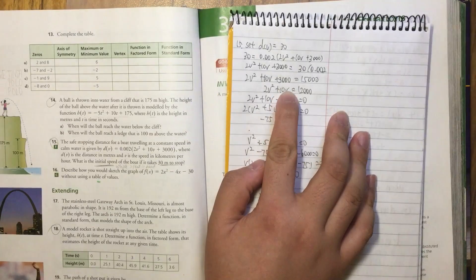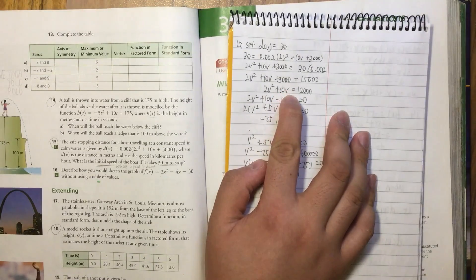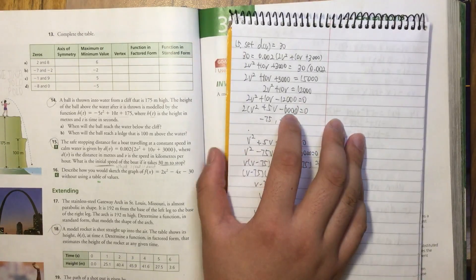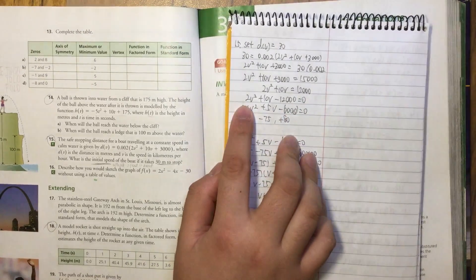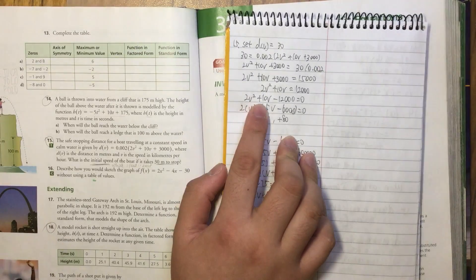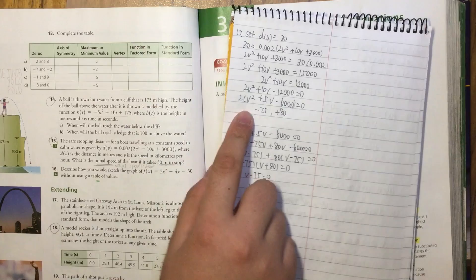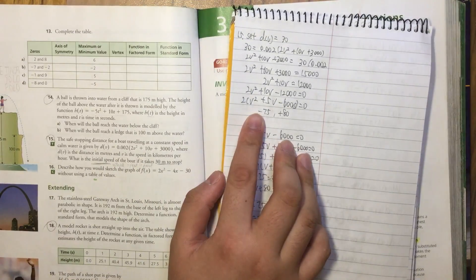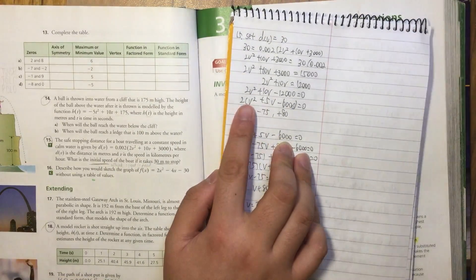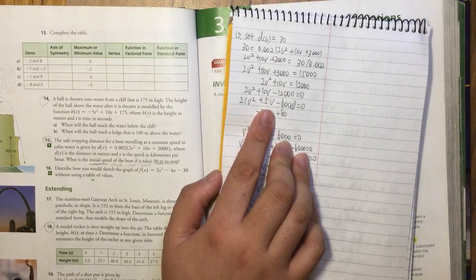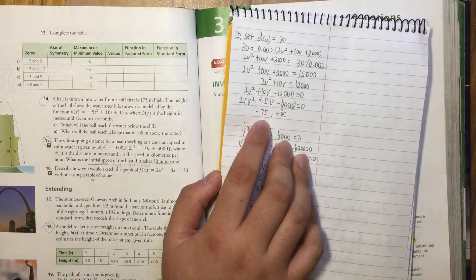After that I found that they have the greatest common factor which is 2, so I take 2 out. Then I can see the equation inside is V² + 5V - 6,000.